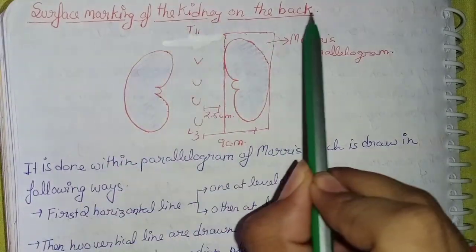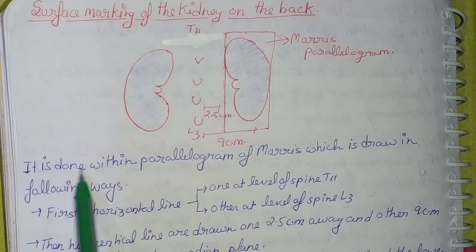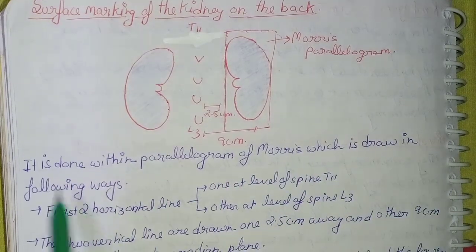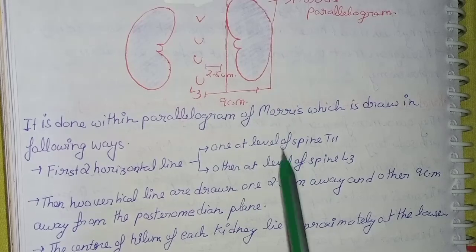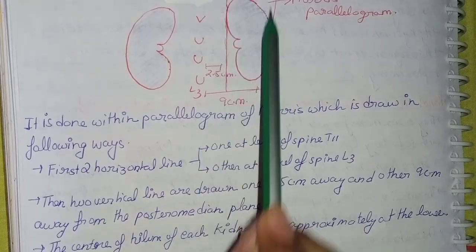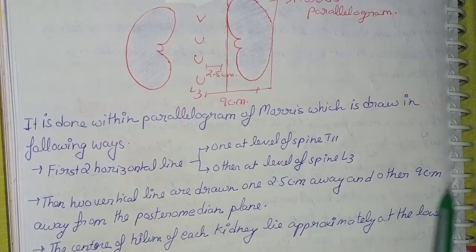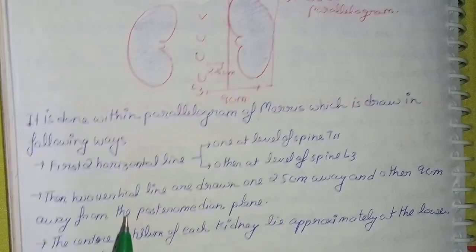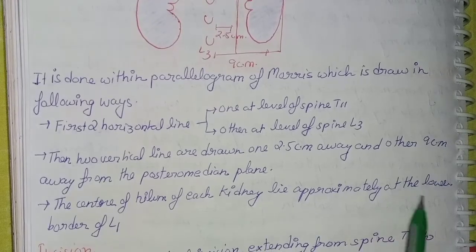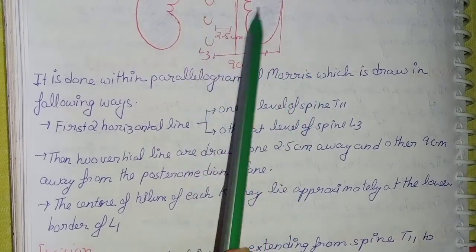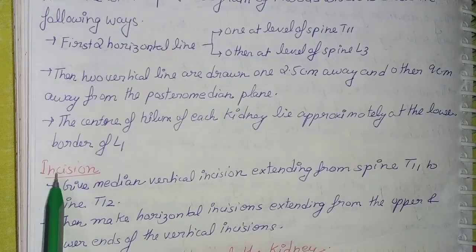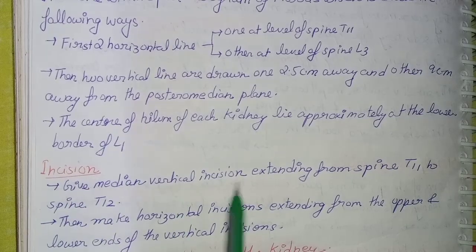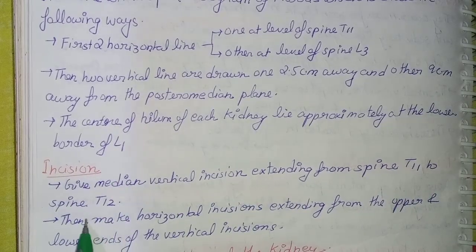Coming to the surface marking of the kidney: it is done with the parallelogram of Morris, drawn as follows — two horizontal lines at the level of T11 and lumbar 3 spine, and two vertical lines: one 2.5 cm from the midline and one 9.5 cm from the midline. The center of the hilum of the kidney lies approximately at the lower border of L1. A median vertical incision extends from T11 to T12, and horizontal incisions extend from the upper and lower borders of the vertical incision.